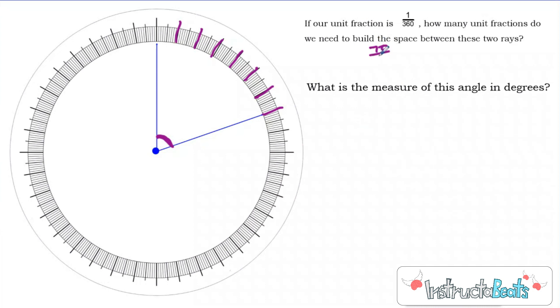So I would need seventy pieces out of three hundred sixty to build this fraction right here of a circle. So what is the measure of this angle in degrees? Seventy degrees. So you can see seventy degrees is not quite one-fourth of my circle. It's a little bit less. But this is how big seventy degrees would be.